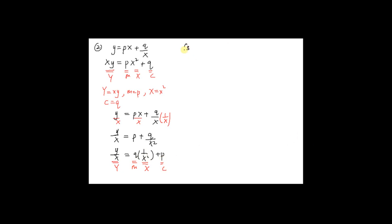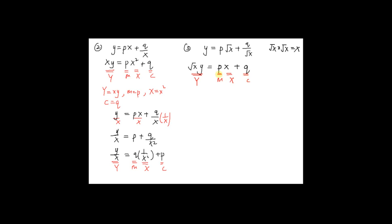Now the third example: if you have y = p√x + q/√x, one method is to multiply every term by √x. So you have √x · y = p√x · √x + q/√x · √x, which gives √(xy) = px + q. This is in the form Y = mX + c, where big Y = √(xy), gradient m = p, big X = x, and c = q.